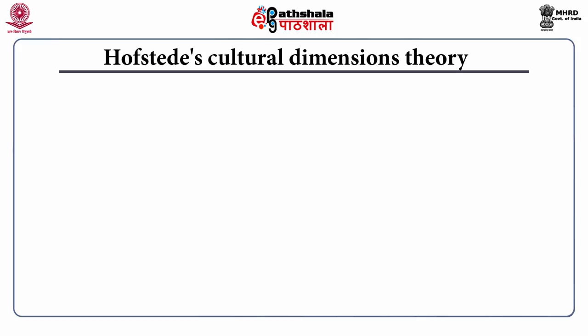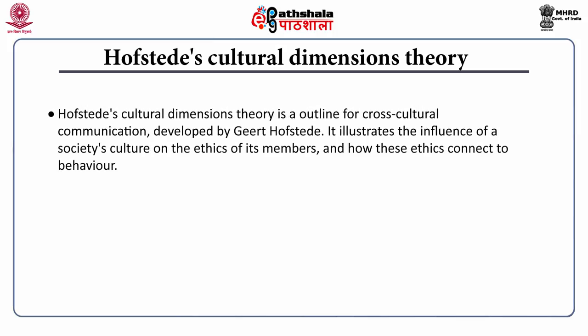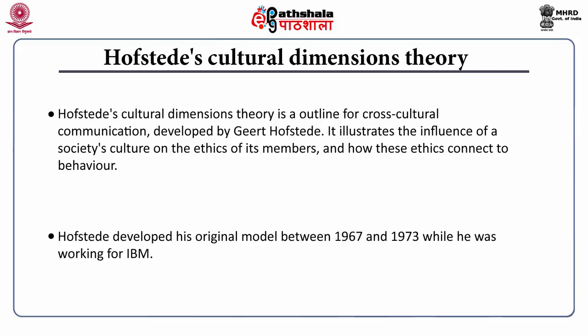Hofstede's Cultural Dimension Theory is an outline for cross-cultural dimensions developed by Geert Hofstede. It illustrates the influence of a society's culture on the ethics of its managers or members and how these ethics connect to behavior. Hofstede developed his original model between 1967 and 1973 while working for IBM. He surveyed more than one lakh IBM employees and established that managers and employees differ in five value aspects of national culture: power distance, individualism vis-a-vis collectivism, masculinity vis-a-vis femininity, uncertainty avoidance, and long term vis-a-vis short term orientation.